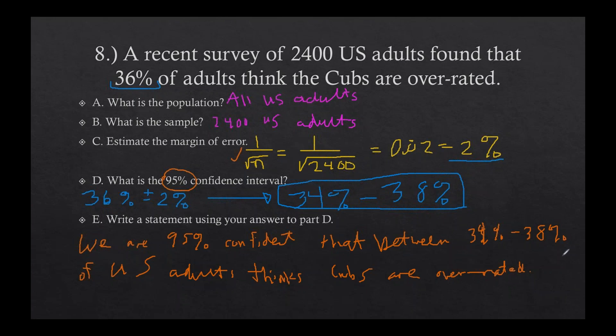That's basically Section 18 in a nutshell. The math isn't hard — it's just making sure you do enough examples that all of the words and everything make sense in your head. A lot of people do one example, think it's easy, and don't do any more. Then when exam time comes, they forget because there wasn't enough repetition. Don't skimp on the repetition just because it's not as difficult as other things.